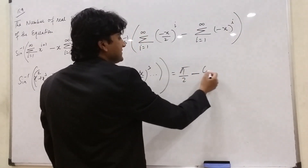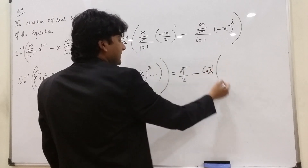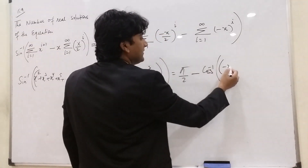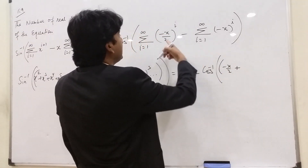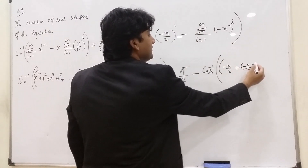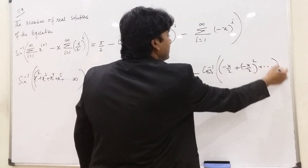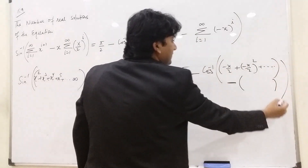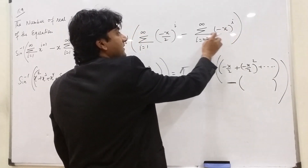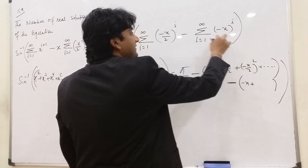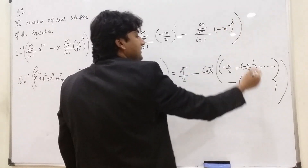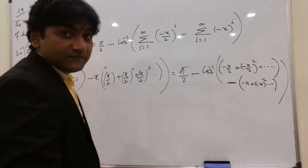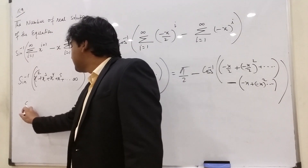The sine inverse bracket is now complete, equal to π/2. Then for the cos inverse side, with i=1 we get −x/2, then (−x/2)², and continuing. For the final summation, when i=1 we get −x, when i=2 we get (−x)², then (−x)³, and so on.